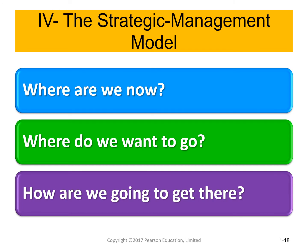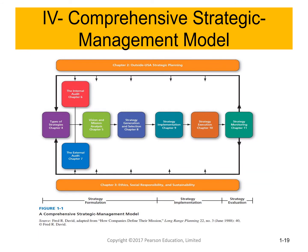The strategic management model includes three key questions: Where are we now? Where do we want to go? And how are we going to get there? The chapters map onto the three stages: formulation, implementation, and evaluation. We are covering chapters 1, 4, and 5.